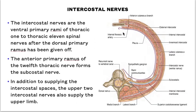The intercostal nerves are the ventral primary rami of thoracic 1 to thoracic 11 spinal nerves, after the dorsal primary ramus has been given off. The anterior primary ramus of the 12th thoracic nerve forms the subcostal nerve.